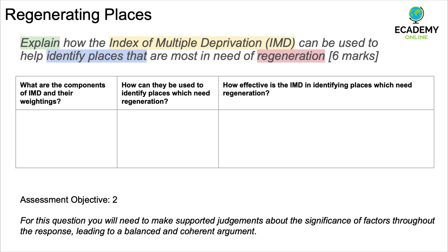Gentrification is carried out by private citizens using private capital to upgrade private housing stock, which then accrues value and may be sold on at a higher price or lived in long-term. Don't confuse that with regeneration — if you're not sure, look it up in your textbook. On the far right-hand side of the table, consider how effective the index of multiple deprivation is in identifying places which need regeneration. In some cases it may be helpful, but in some circumstances it may not be.